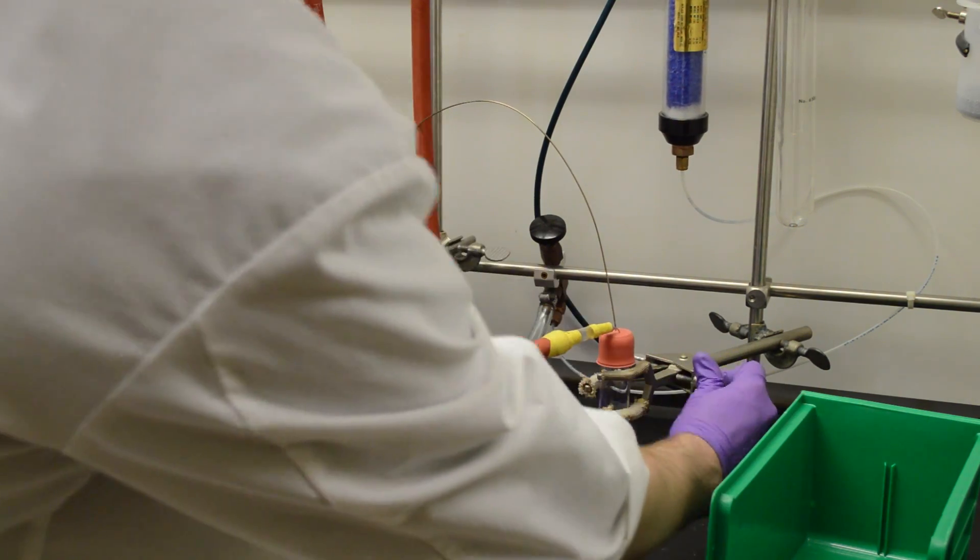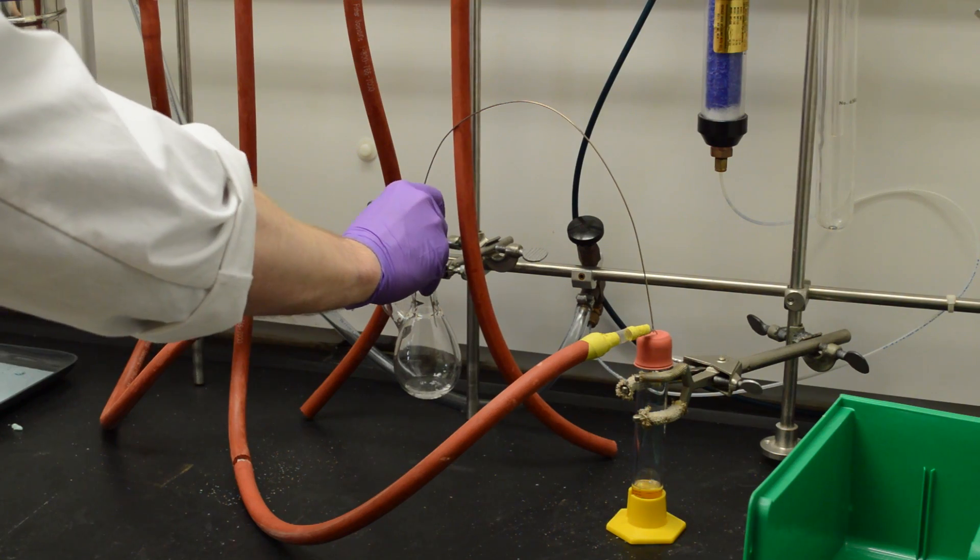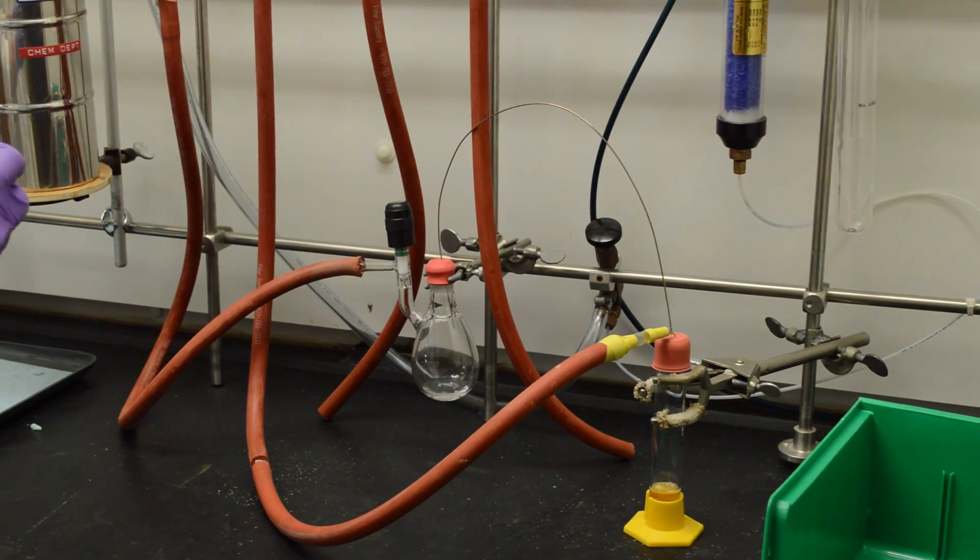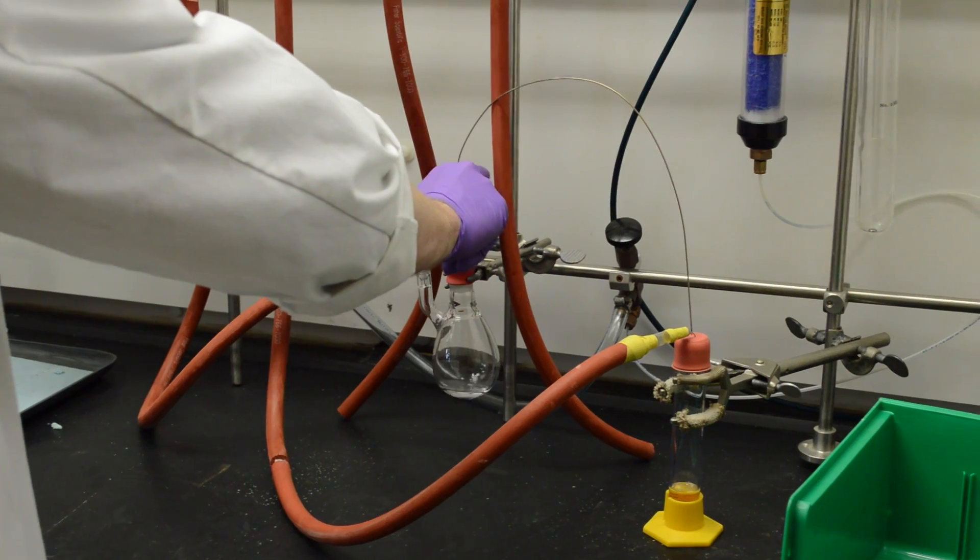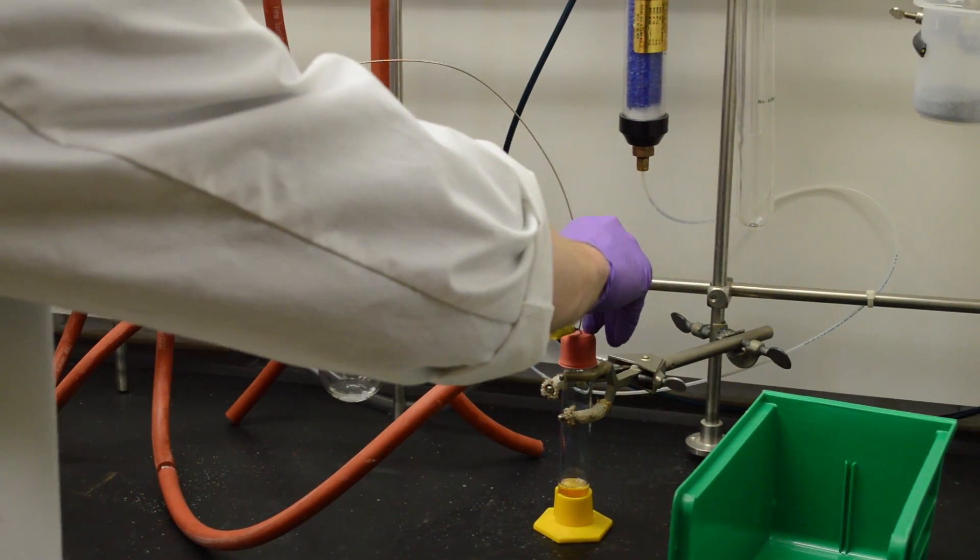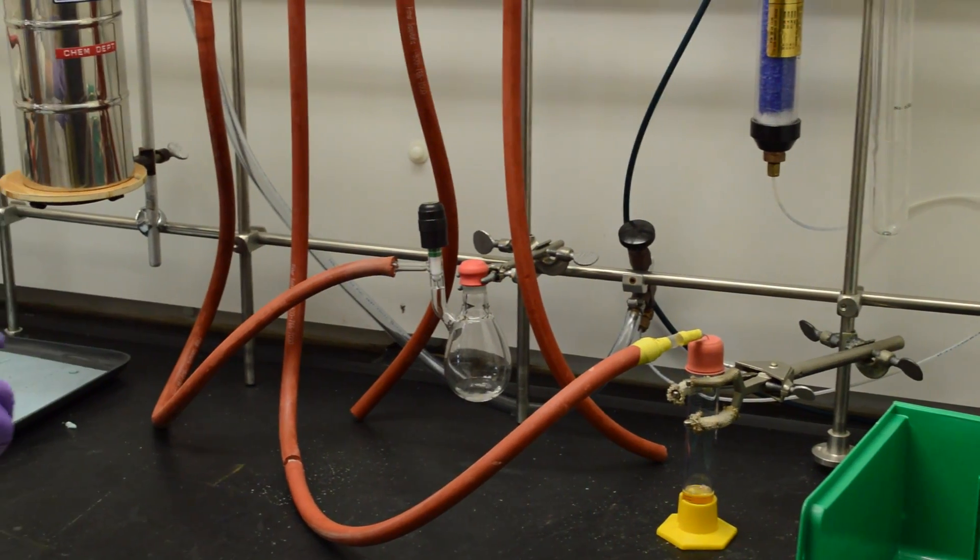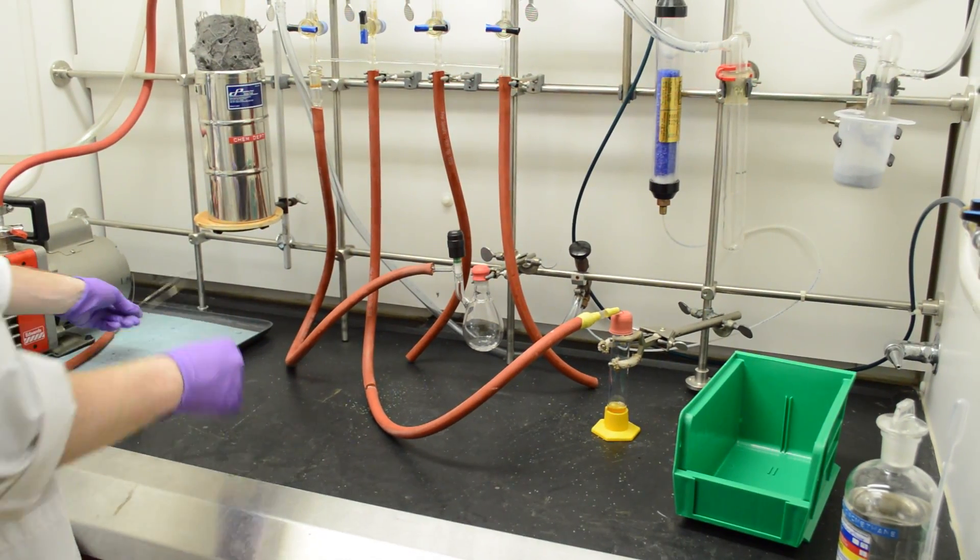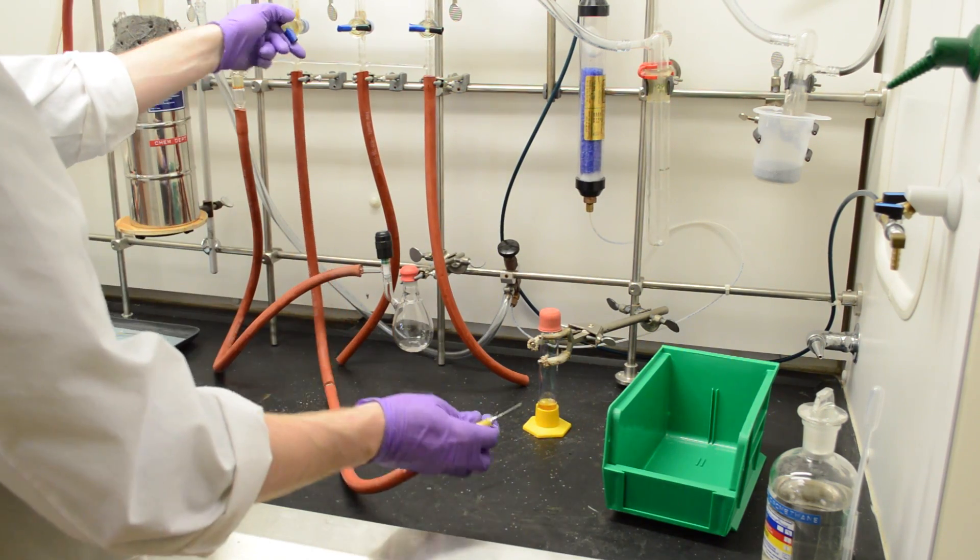So now we just need to work backwards to make sure that we don't contaminate the system with any oxygen. So you take out the small green needle first and just put it back in the cooler. And we can take this end of the cannula out, followed by this one. And finally, you can just remove the nitrogen from that and turn it off.